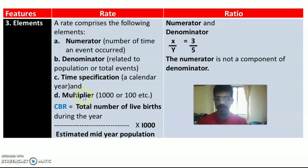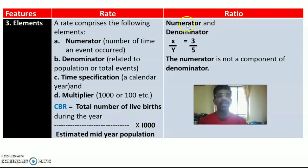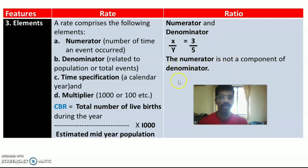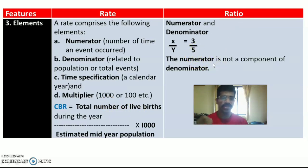So, elements of rate include: numerator, denominator, time specification (usually a calendar year), and a common multiplier. Whereas in ratio, we have only numerator and denominator — that is x and y. Importantly, in ratio the numerator is not a component of the denominator, whereas in rate the denominator actually is a component or part of the numerator.